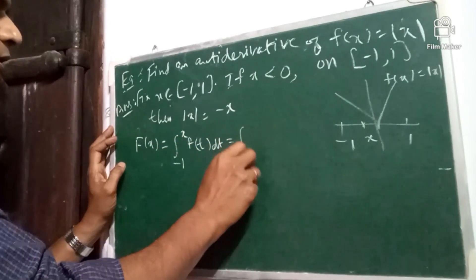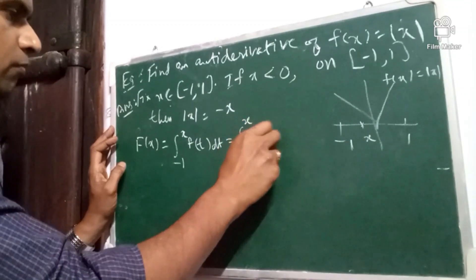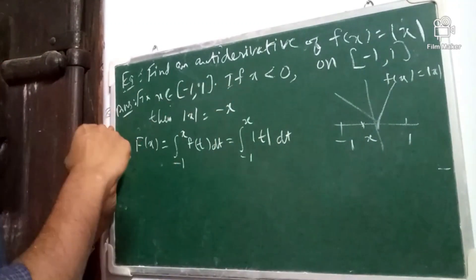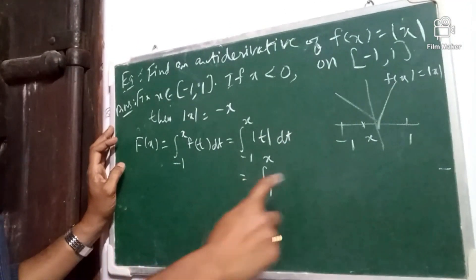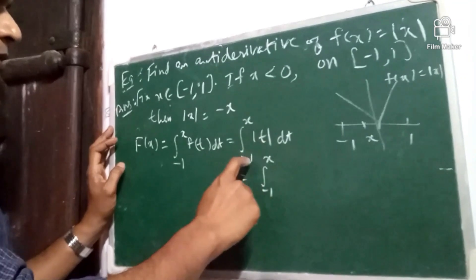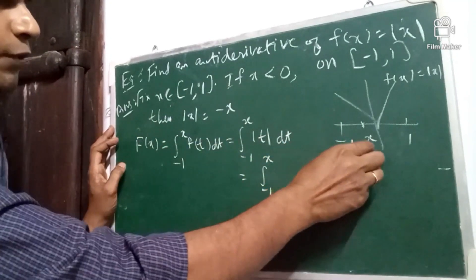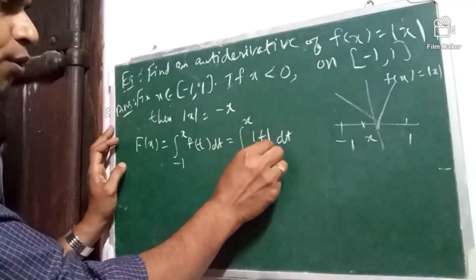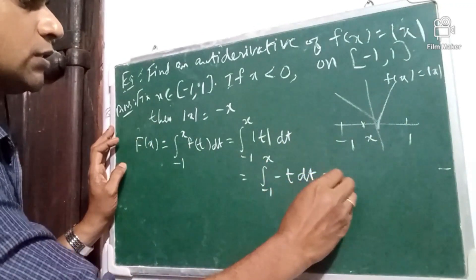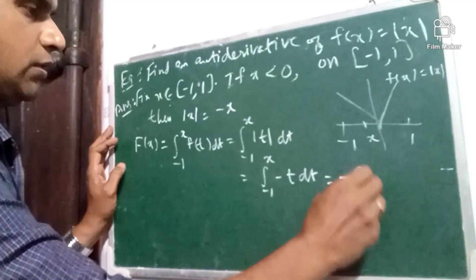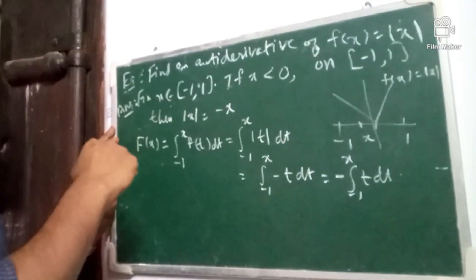This is equal to integral minus 1 to x of mod t. Now, here t varies from minus 1 to x, so t is also negative. So, mod t is minus t. This gives minus integral from minus 1 to x of t dt. This is the case if x is less than 0.